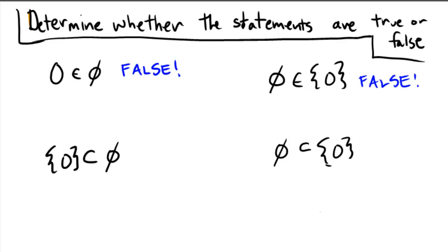In the bottom left-hand corner, we have: the set containing zero is a subset of the empty set. Subset means that everything in the set on the left has to be in the set on the right. The only object inside that set is the number zero. So in order for subset to hold, we'd have to look at the right-hand side and make sure that zero was in that set. However, the set on the right is the empty set — it contains nothing. So this statement is false.